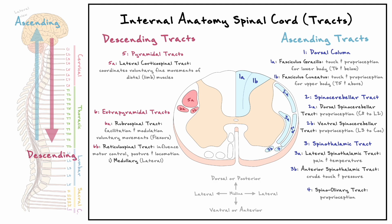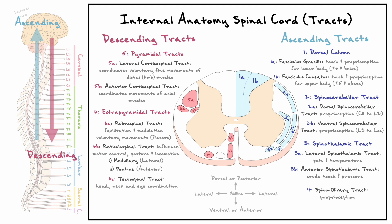In the ventral column, there are four descending tracts. The pontine division of the reticulospinal tract comes from the pons and participates in modulation of movement. The anterior corticospinal tract helps coordinate movements of axial muscles. The tectospinal tract activates muscles of the head and neck to coordinate them with eye movements. Finally, the vestibulospinal tract activates extensor muscles based on signals from the vestibular system to control balance and posture.